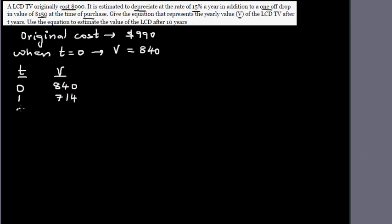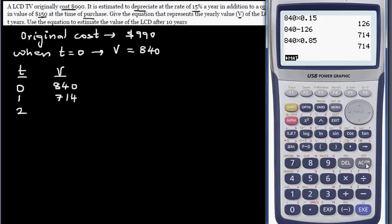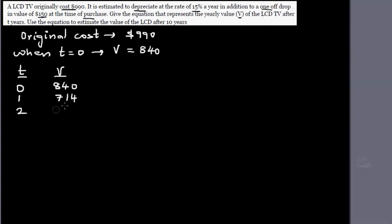So after two years, again, let me show you both ways. So you go 714, take away 0.15 times 714. Or you can also go directly 714 times 0.85. That will give you the same value, 606.9. So I think this is enough. And so on, this will keep on decreasing.